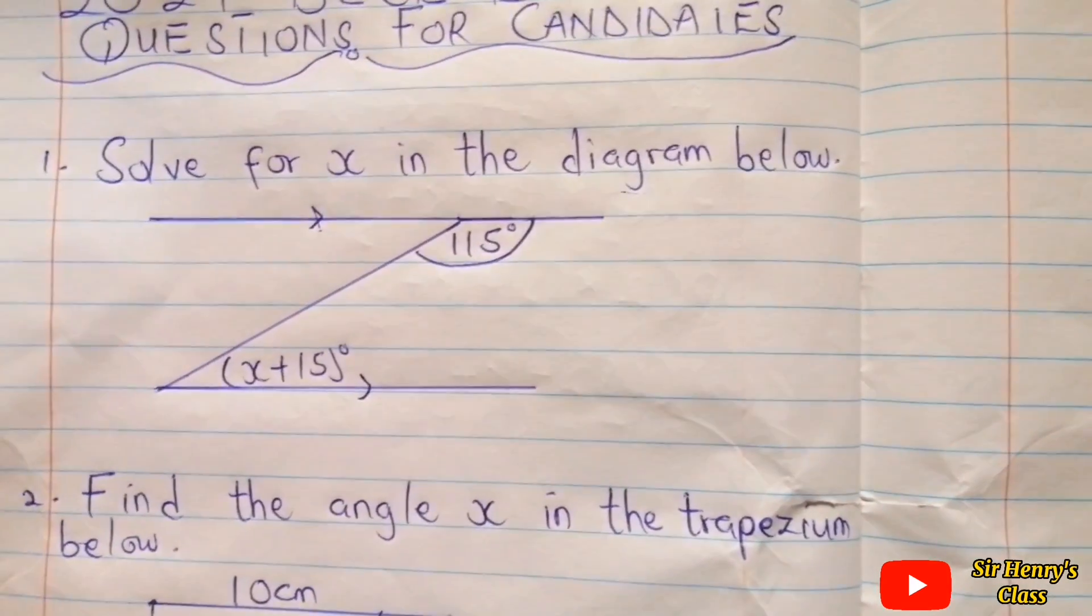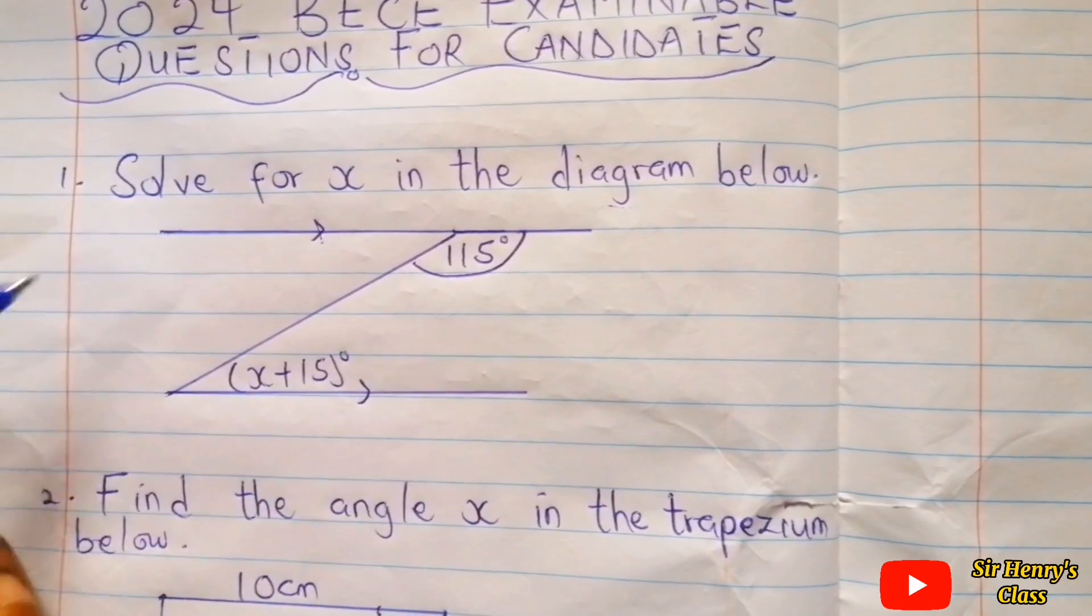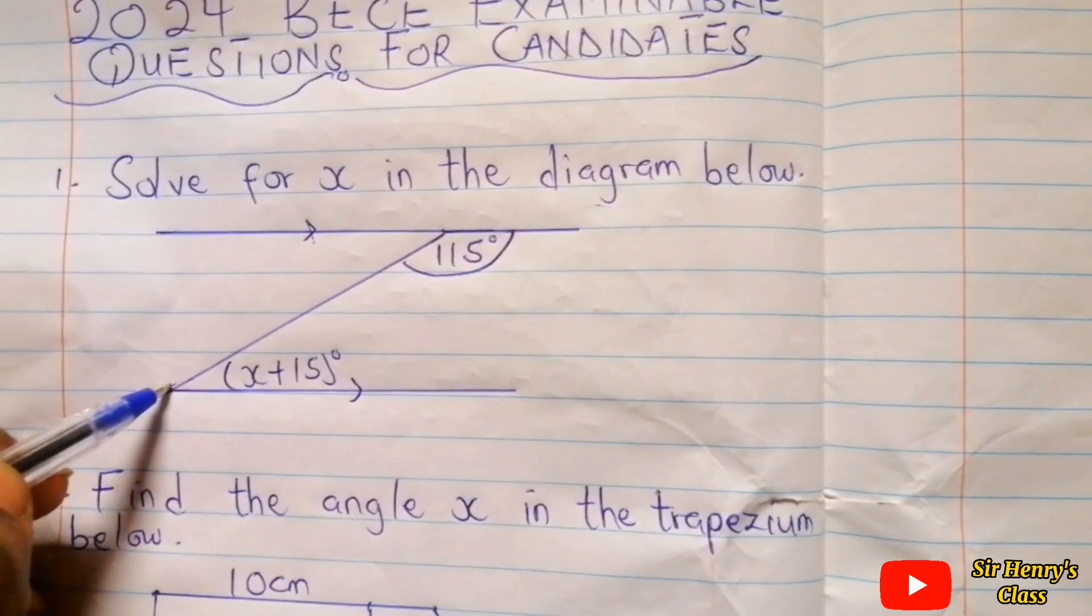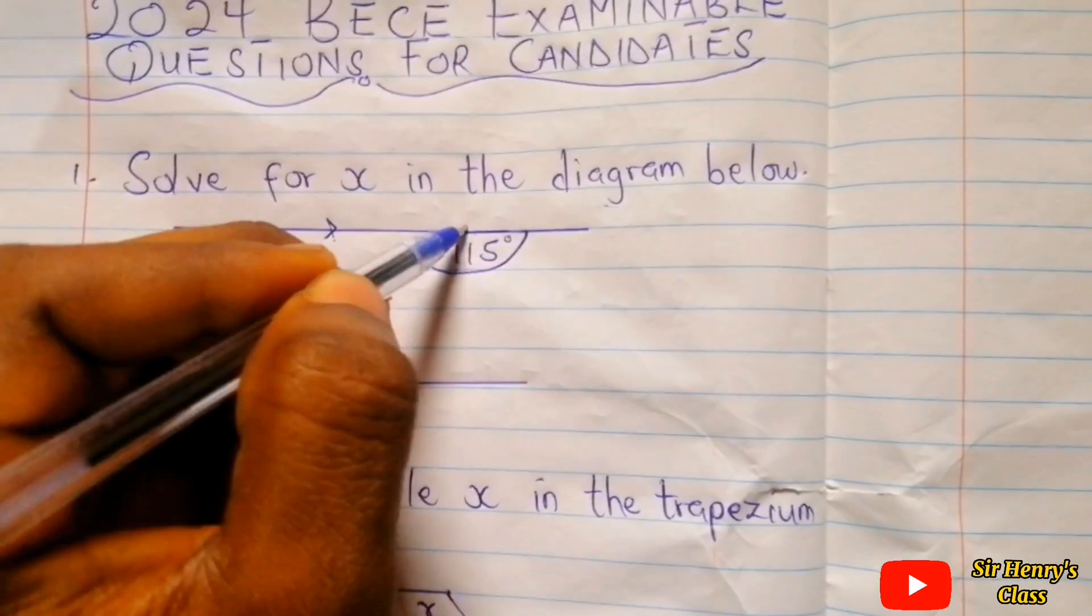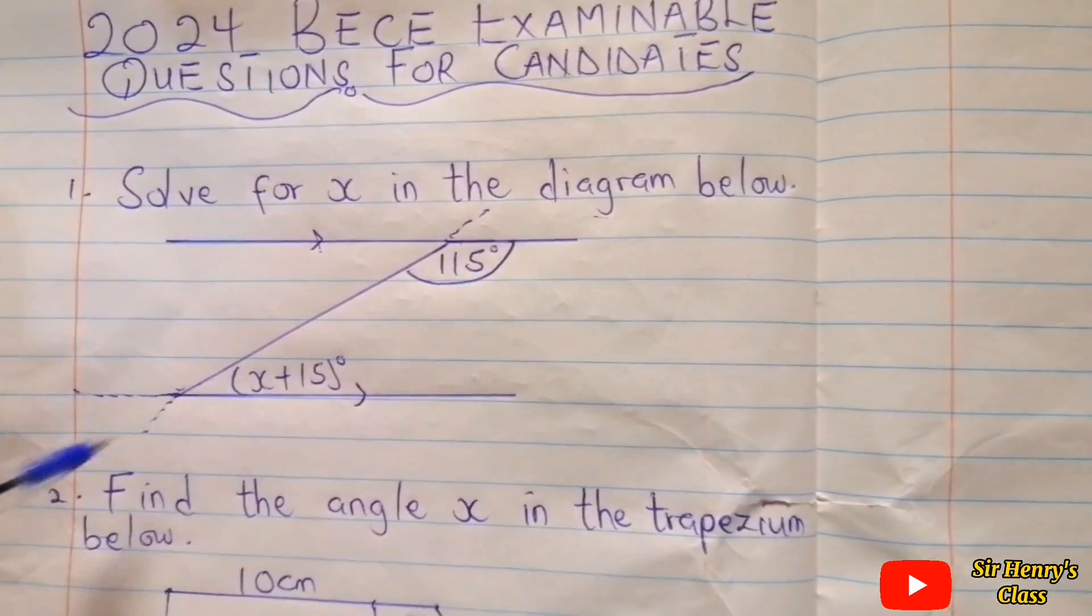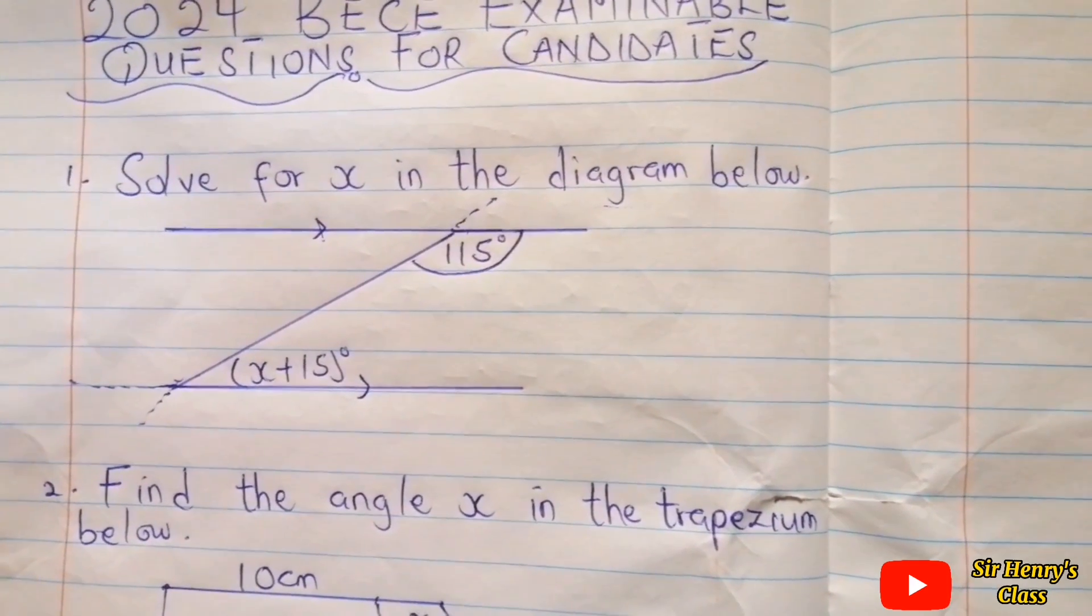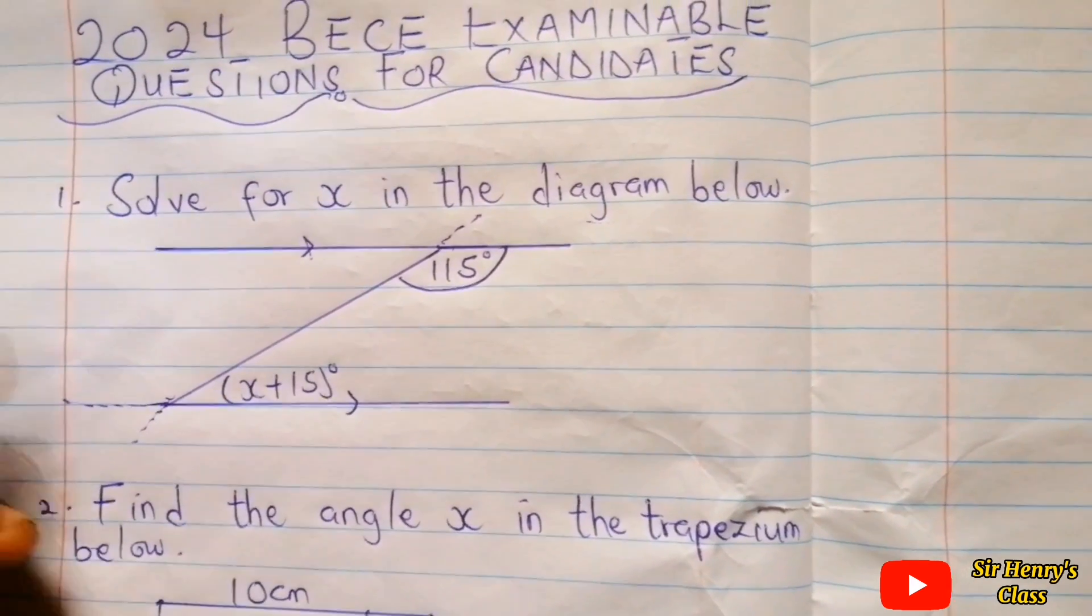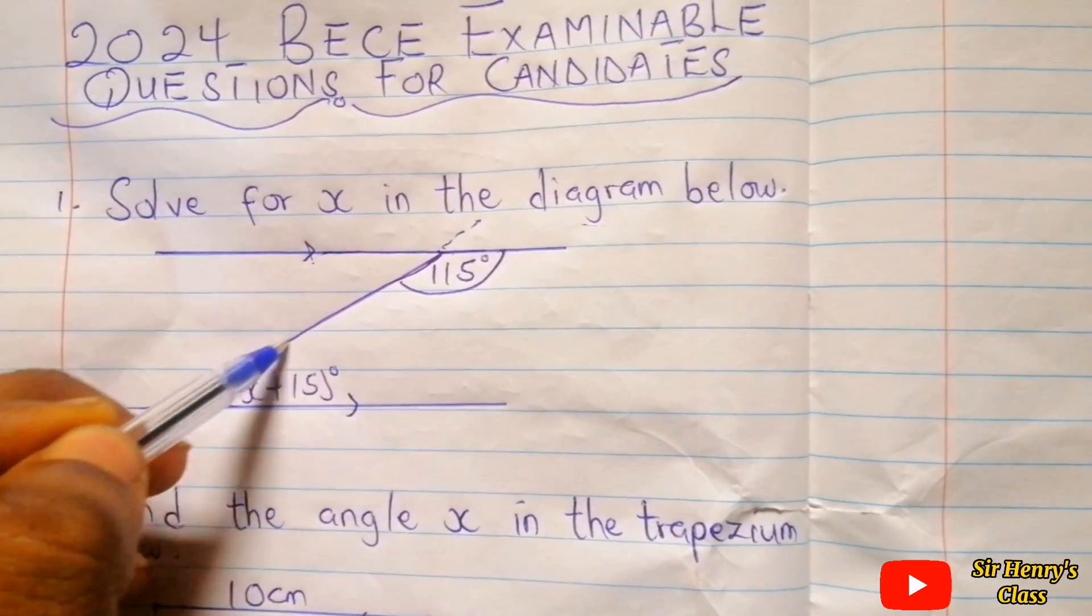So there's one parallel line, this one parallel line. When a line runs through the parallel line, we can extend the parallel line and extend this line. When the line runs through the parallel lines, we call it a transversal.